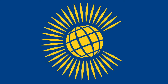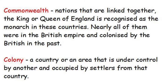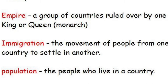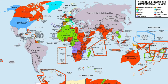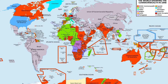The flag I'm showing you now is the flag for the Commonwealth. The Commonwealth is a group of nations linked together where the King or Queen of England is recognised as the monarch. Nearly all of those countries were in the British Empire and colonised by the British in the past. A colony is a country or area under control by another country and occupied by settlers from that country. An empire is a group of countries ruled over by one monarch. The map I'm showing you now is what the British Empire looked like in 1948.